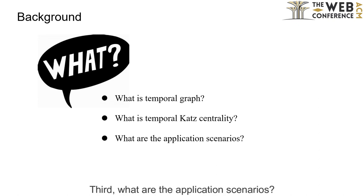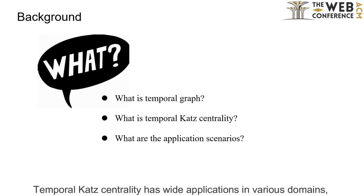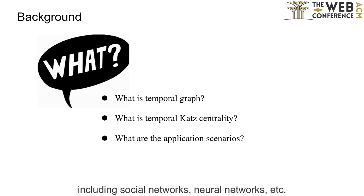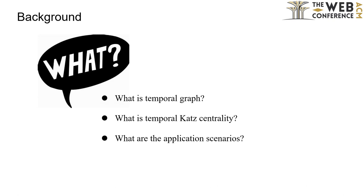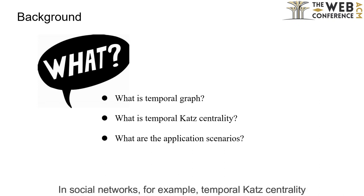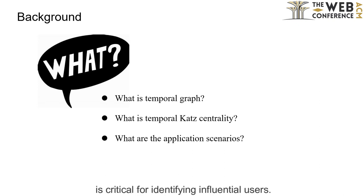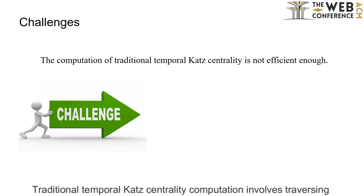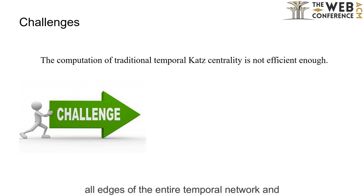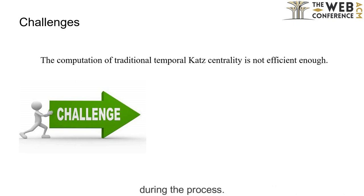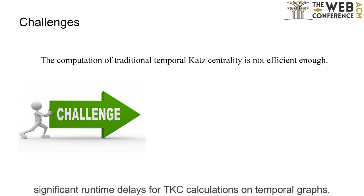Third, what are the application scenarios? Temporal Katz centrality has wide applications in various domains, including social networks, neural networks, etc. In social networks, for example, temporal Katz centrality is critical for identifying influential users. Traditional temporal Katz centrality computation involves traversing all edges of the entire temporal network and continuously updating node centrality values during the process. This computational approach results in significant runtime delays for TKC calculations on temporal graphs.